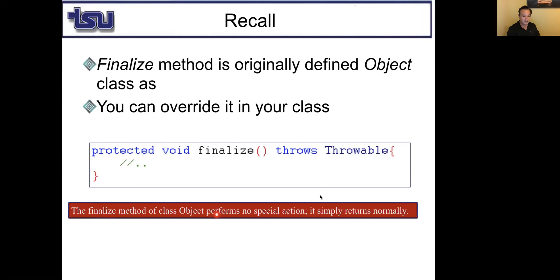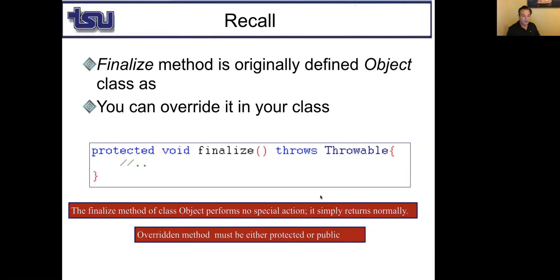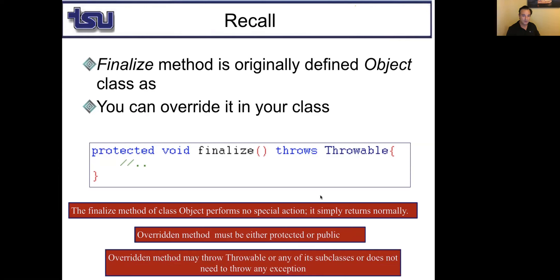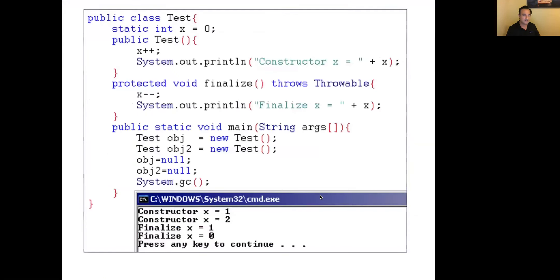The finalize method of the Object class performs no special action — it simply returns normally. The overridden method must be either protected or public, and it may throw Throwable or any of its subclasses, or does not need to throw any exception.